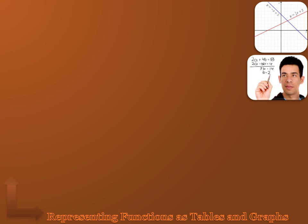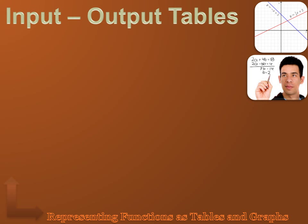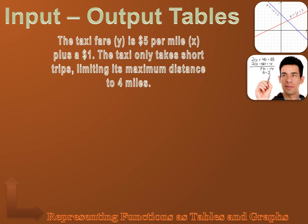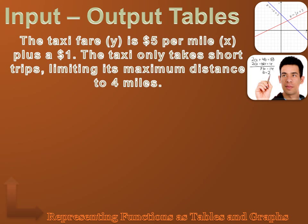So a function shows us a relationship between x and y. It maps y values that would result from the x values that we choose to look at. And we could create what's called an input-output table of those x and y values. Let's look at an example. Let's say that the taxi fare, which we'll call y, is $5 per mile and we'll call x the number of miles traveled plus $1. The taxi only takes short trips, limiting its maximum distance to 4 miles. Can we create a function that describes this relationship? Well, sure we can. The taxi fare y equals 5 times the number of miles plus $1, or y equals 5x plus $1.